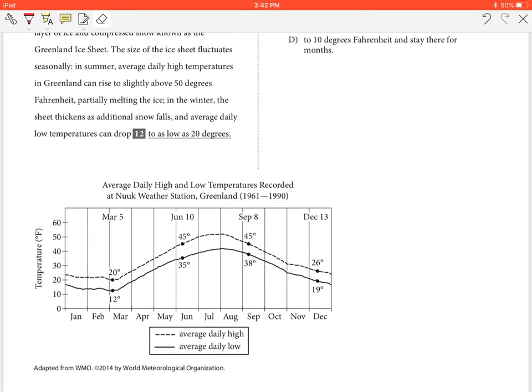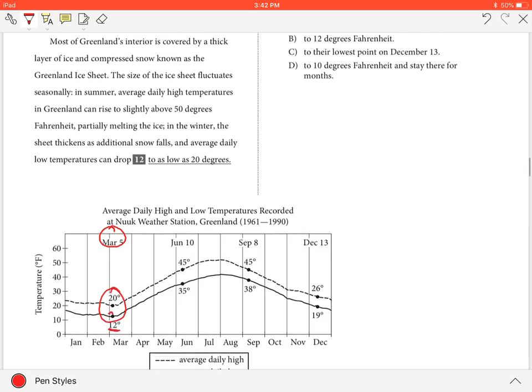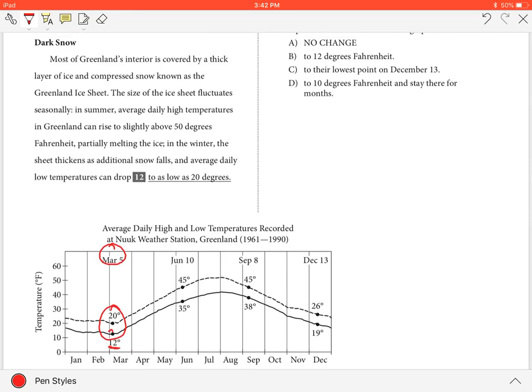...5 shows average low temperatures are at their lowest point, 12 degrees Fahrenheit. Here in the sentence, we can see the writer states in summer, average daily high temperatures in Greenland can rise to slightly above 50 degrees...